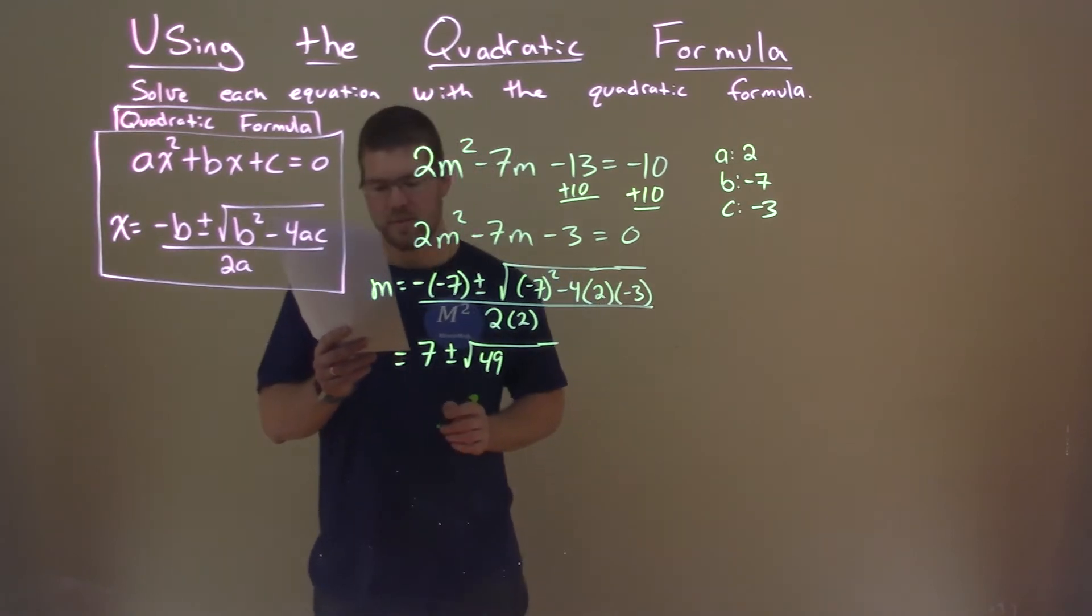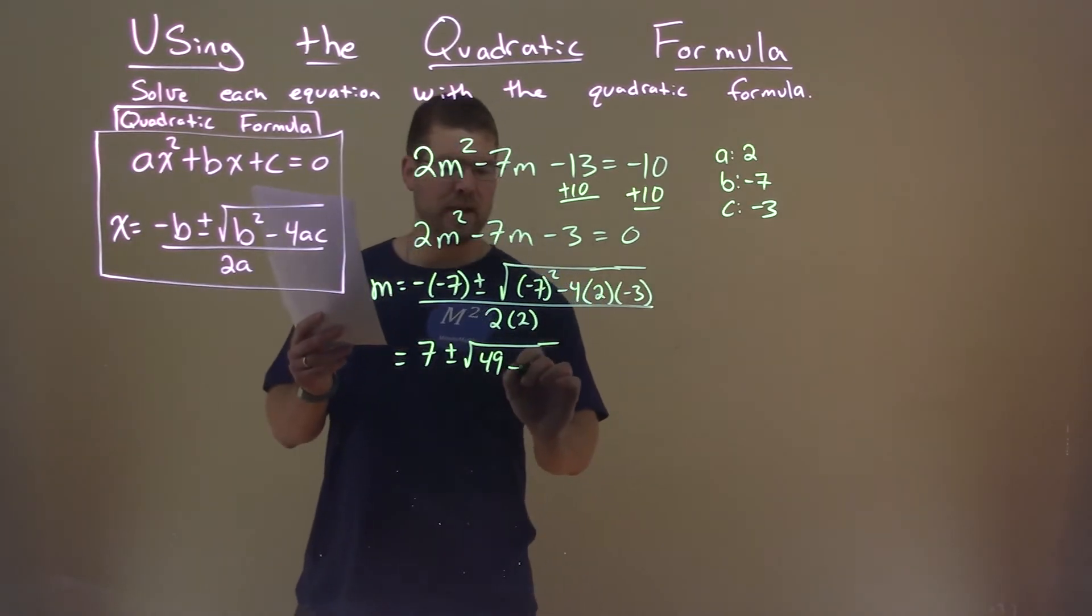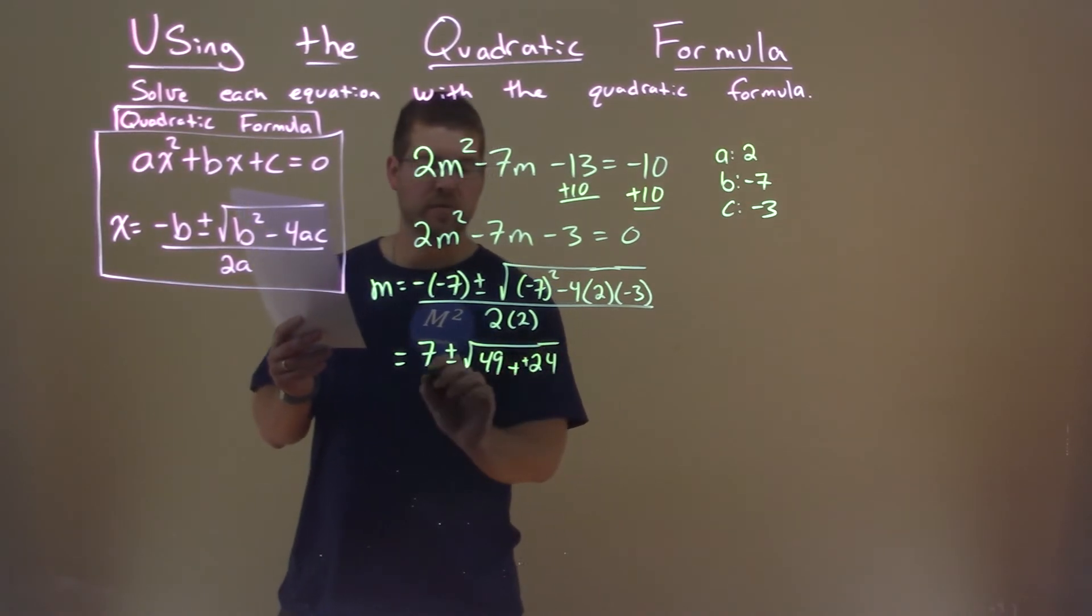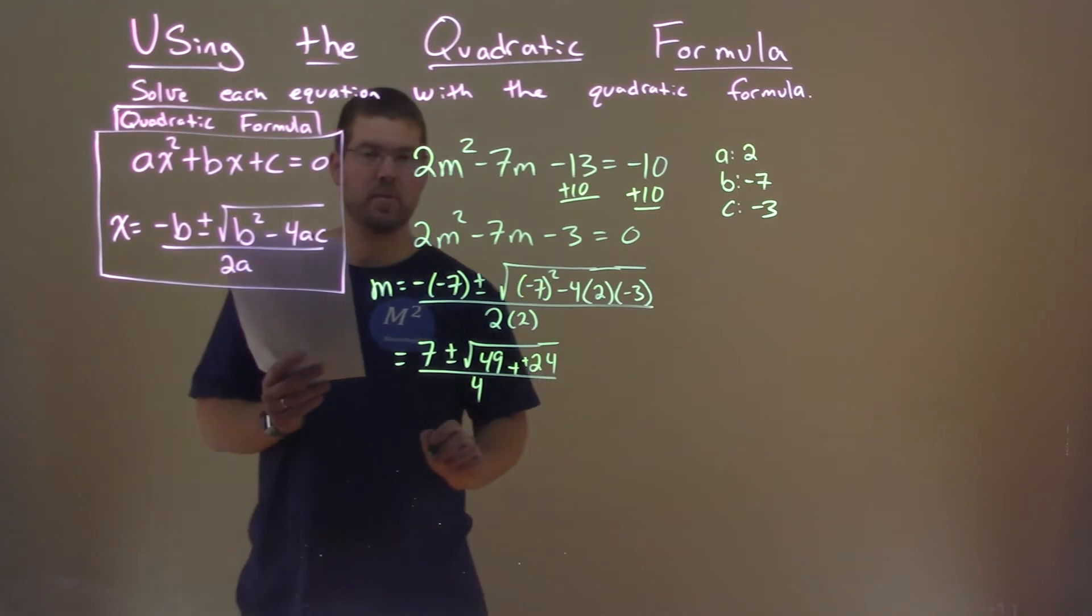And then 4 times 2 times negative 3 is negative 24. But we have minus a negative, so it's like plus a positive. 2 times 2 is 4, and we're good.